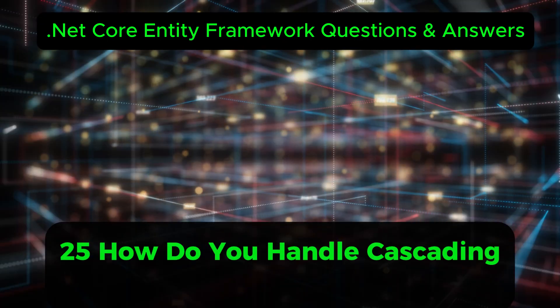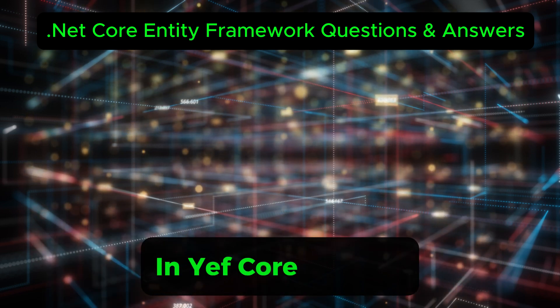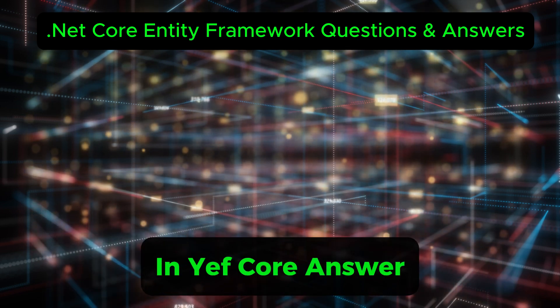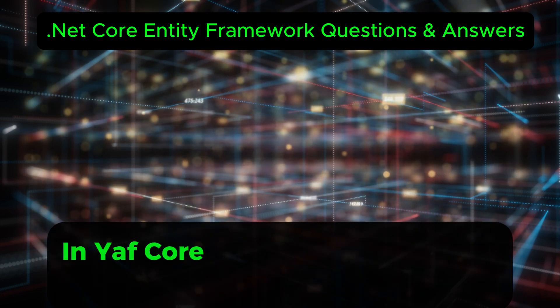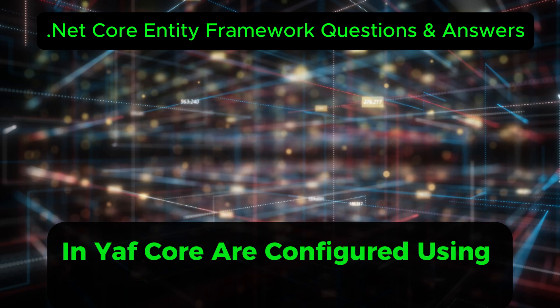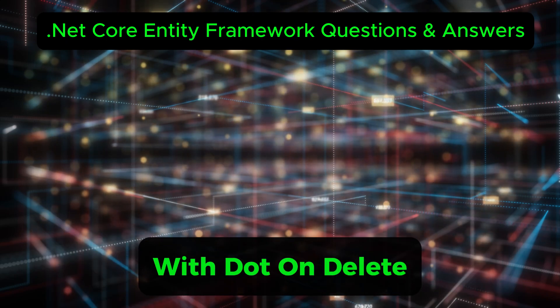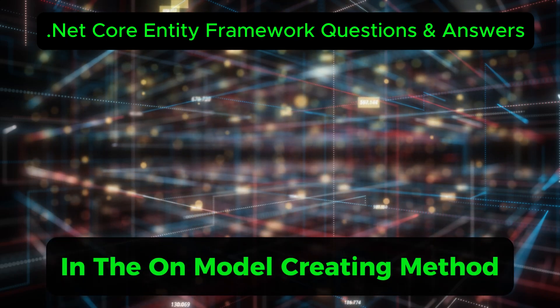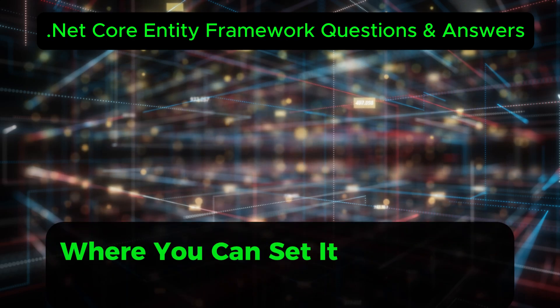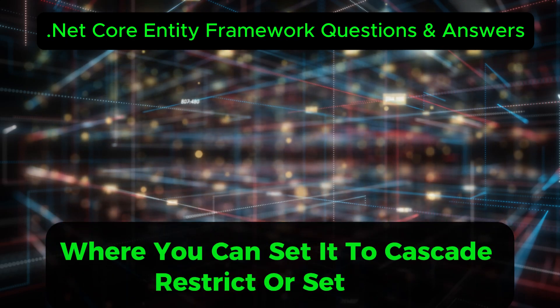How do you handle cascading deletes in EF Core? Cascading deletes in EF Core are configured using the Fluent API with .OnDelete in the OnModelCreating method, where you can set it to Cascade, Restrict, or SetNull.